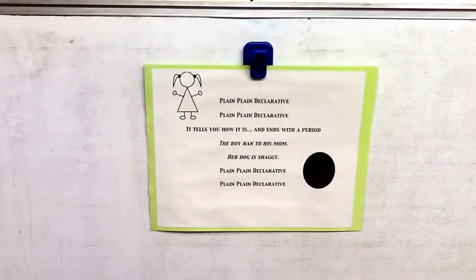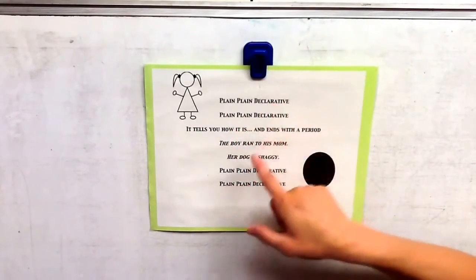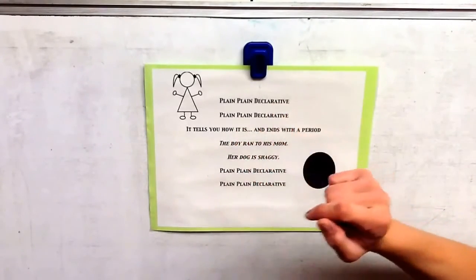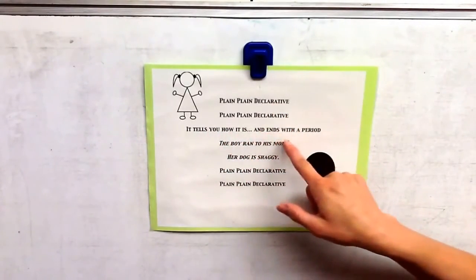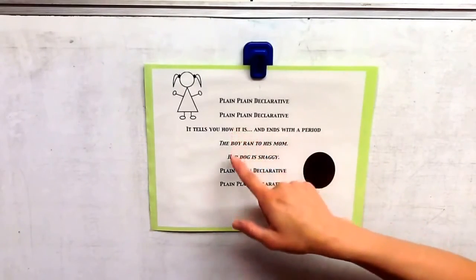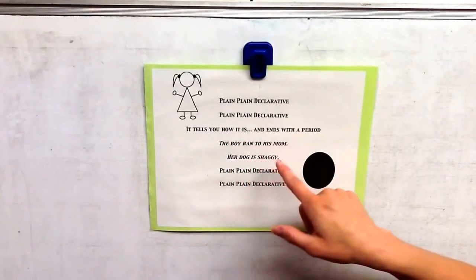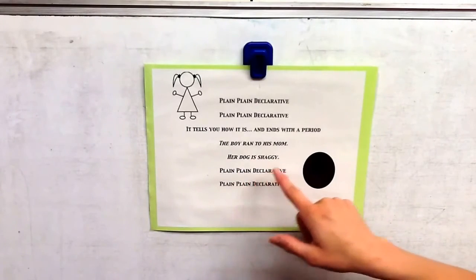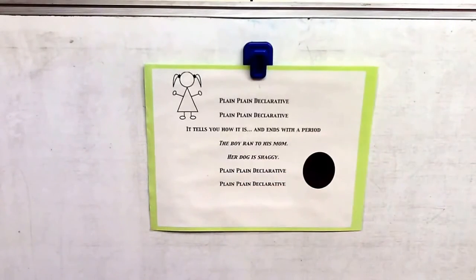Sing it one time with me. Plain, plain declarative. Plain, plain declarative. It tells you how it is and ends with a period. The boy ran to his mom. Her dog is shaggy. Plain, plain declarative. Plain, plain declarative.